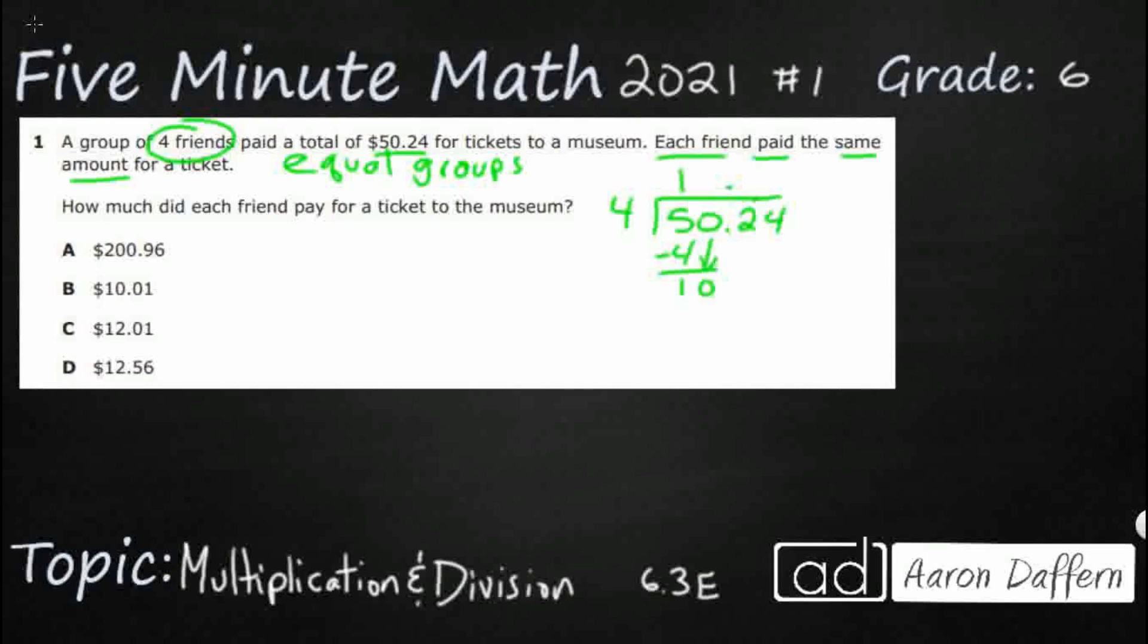So four goes into 10 twice. So that is going to be eight. We're going to subtract, and we're going to get two.